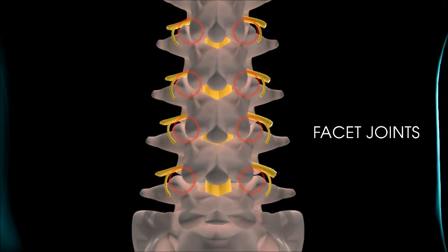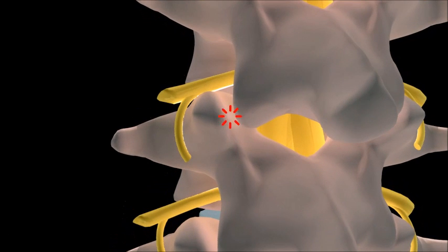Facet joints are little joints situated throughout the spinal column. Pain signals from facet joints are carried by small nerves called the medial branches. Radiofrequency treatment disrupts the pain signals carried by the medial branches.